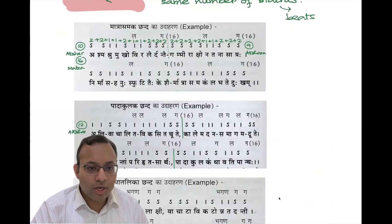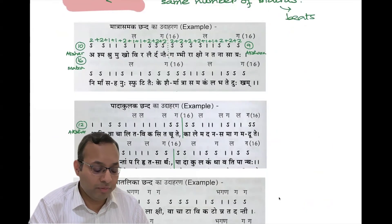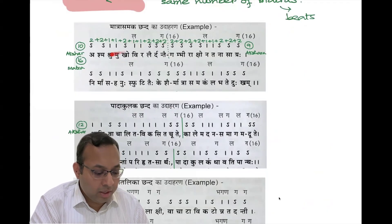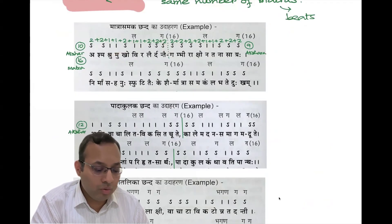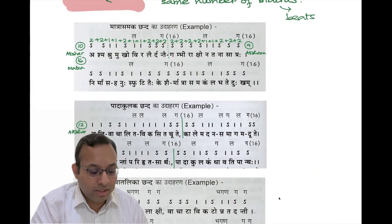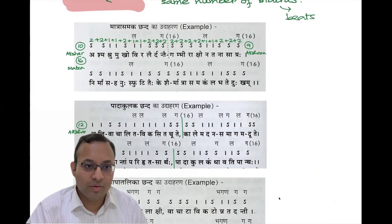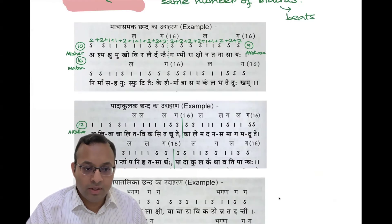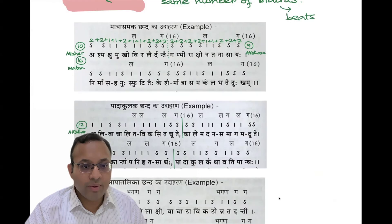In Matra Vrtta, the structure differs from Varna Vrtta. For example, a line might have 16 Matras total — where the S-type symbol represents Guru (2 Matras) and 1 represents Laghu (1 Matra) — but the number of Akshars can vary: one line has 10 Akshars, another has 9, yet both sum to 16 Matras. Vrtta means repetition or circle — the same pattern repeats. The sound and rhythm are good because the number of Matras is the same, not the Akshars.